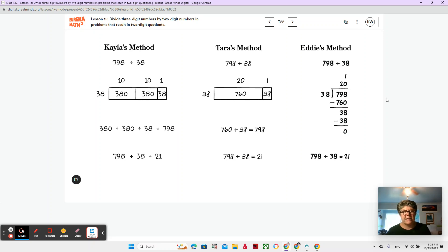Did you notice that Kayla and Tara are using an area model? And Eddie is using the vertical form, but he also has partial quotients here. You see the two numbers. And what do you notice about their work?